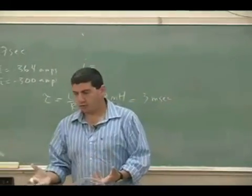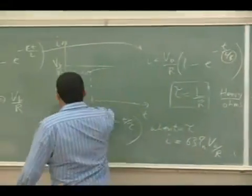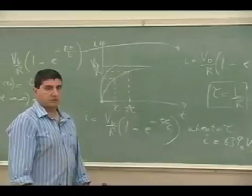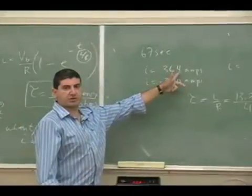Okay. So here's what happened. As soon as I hooked it up, the thing just charged up immediately. Right? So its maximum current that it charged up to was 3.64 amps.